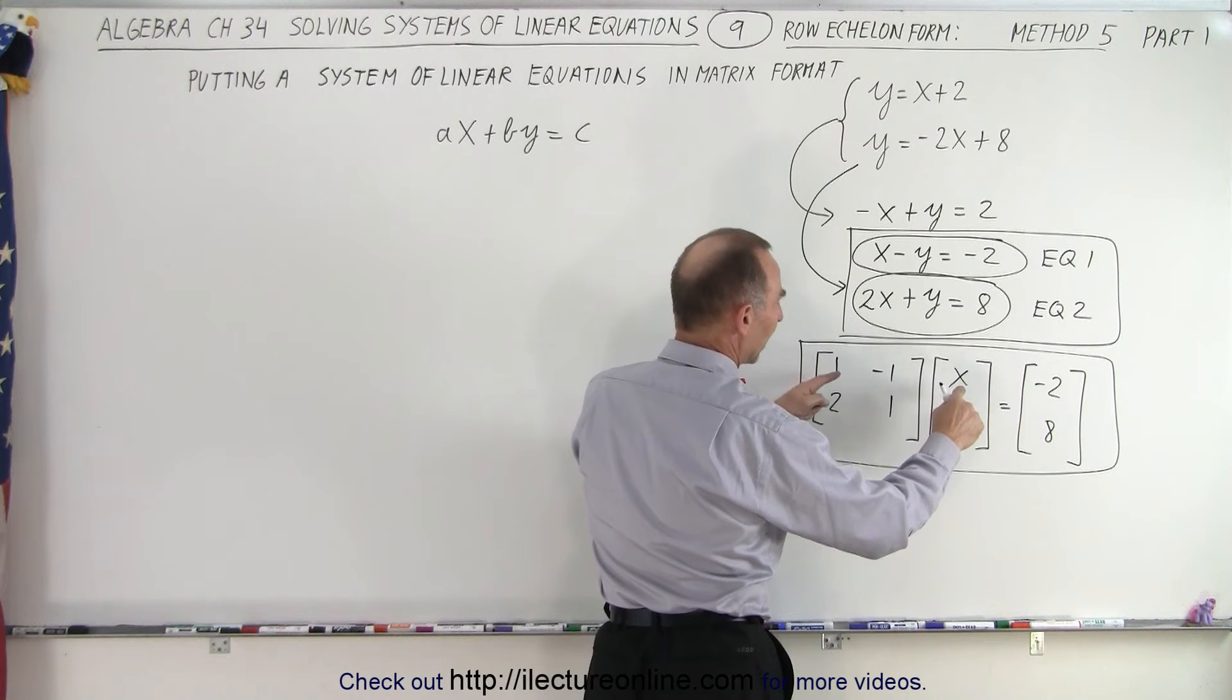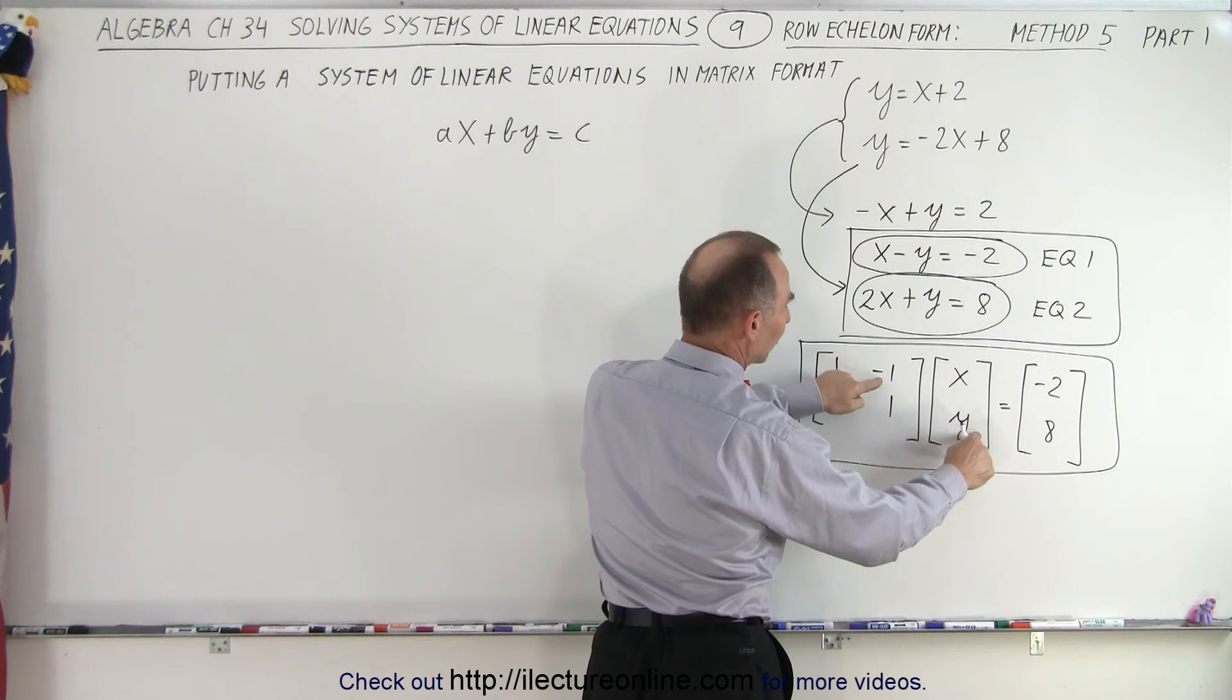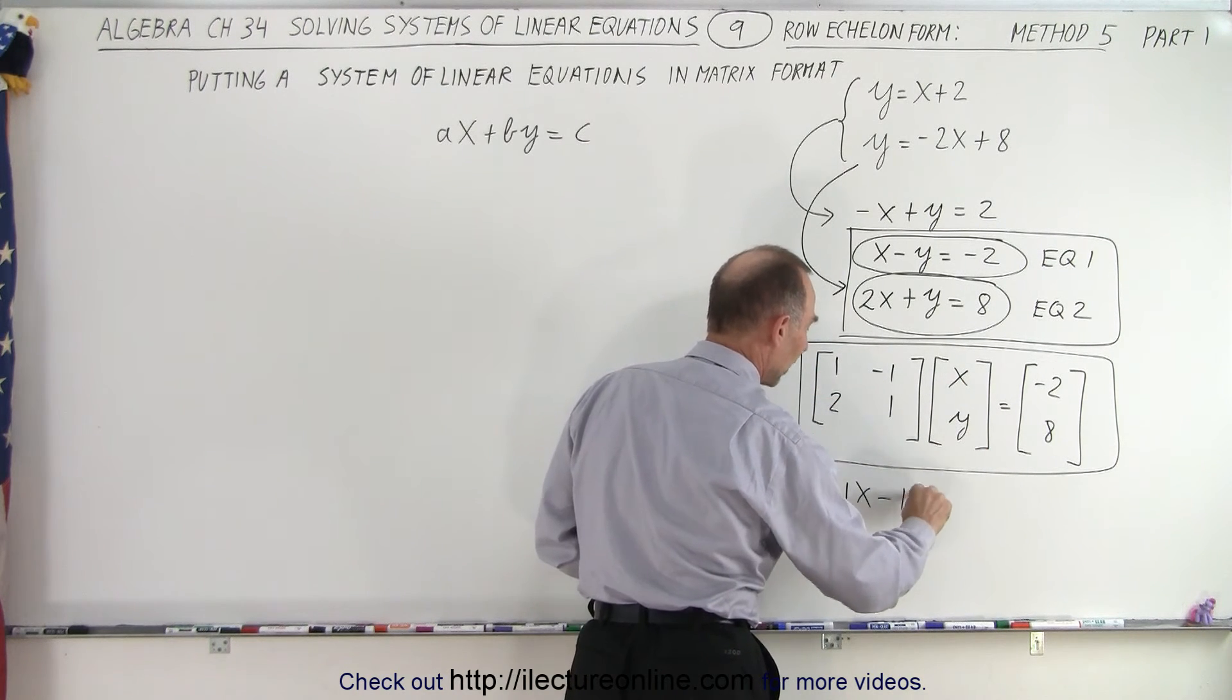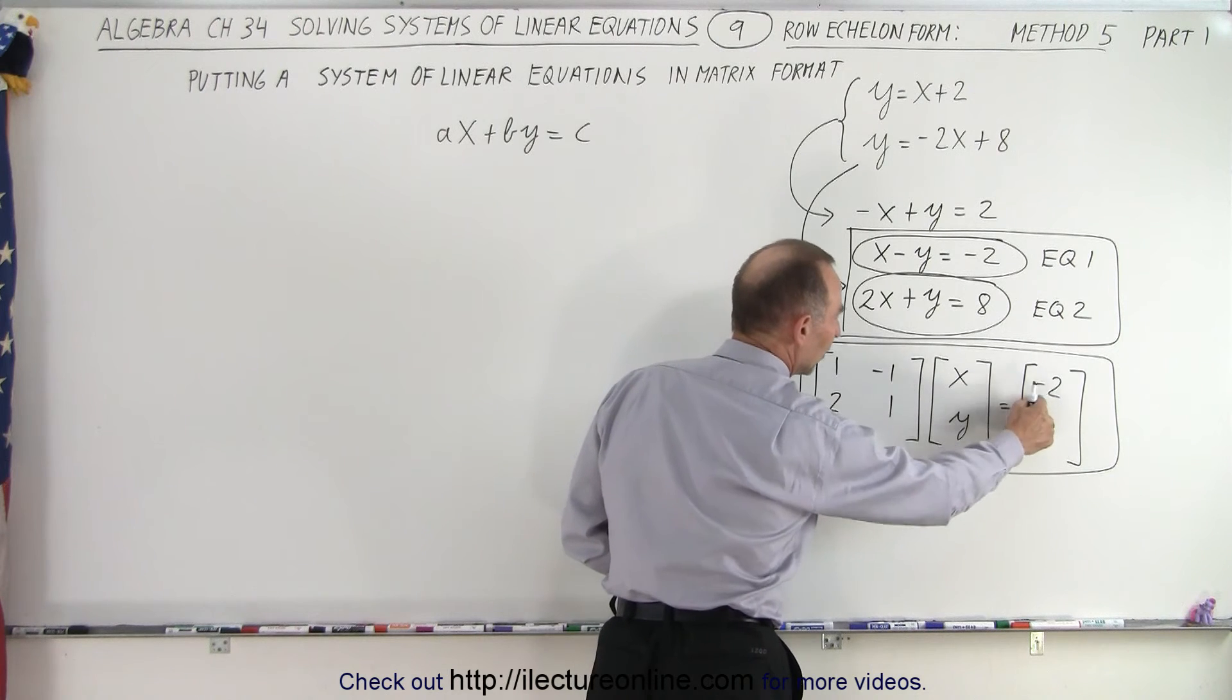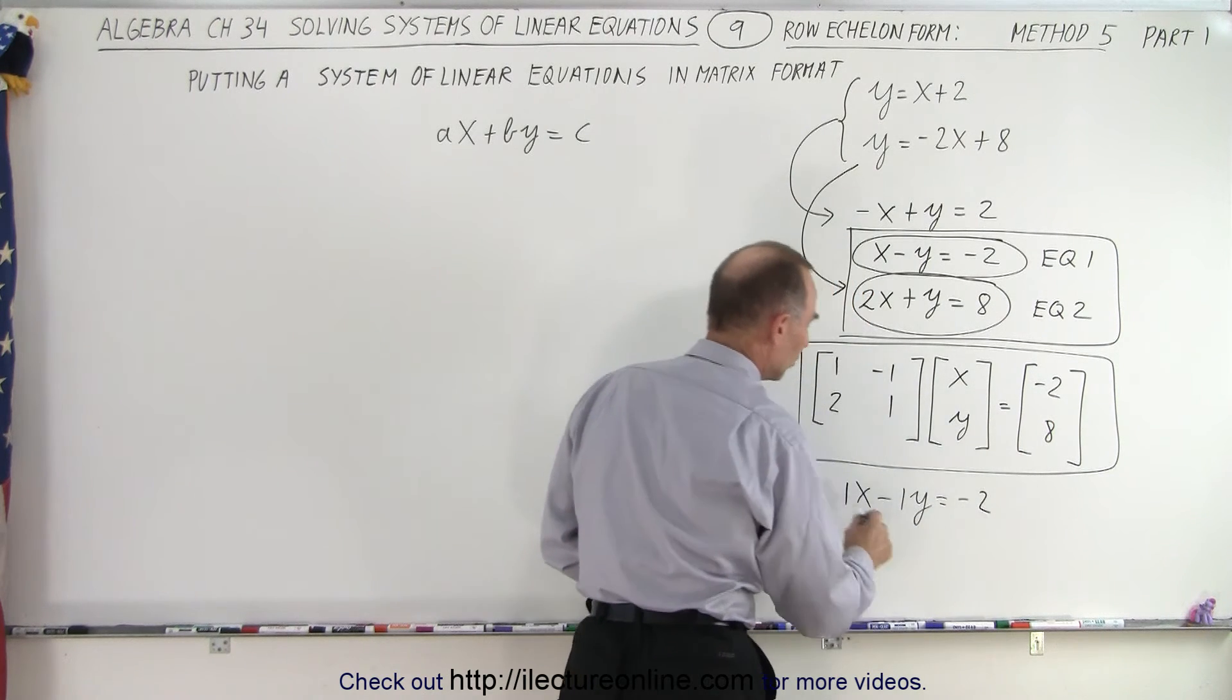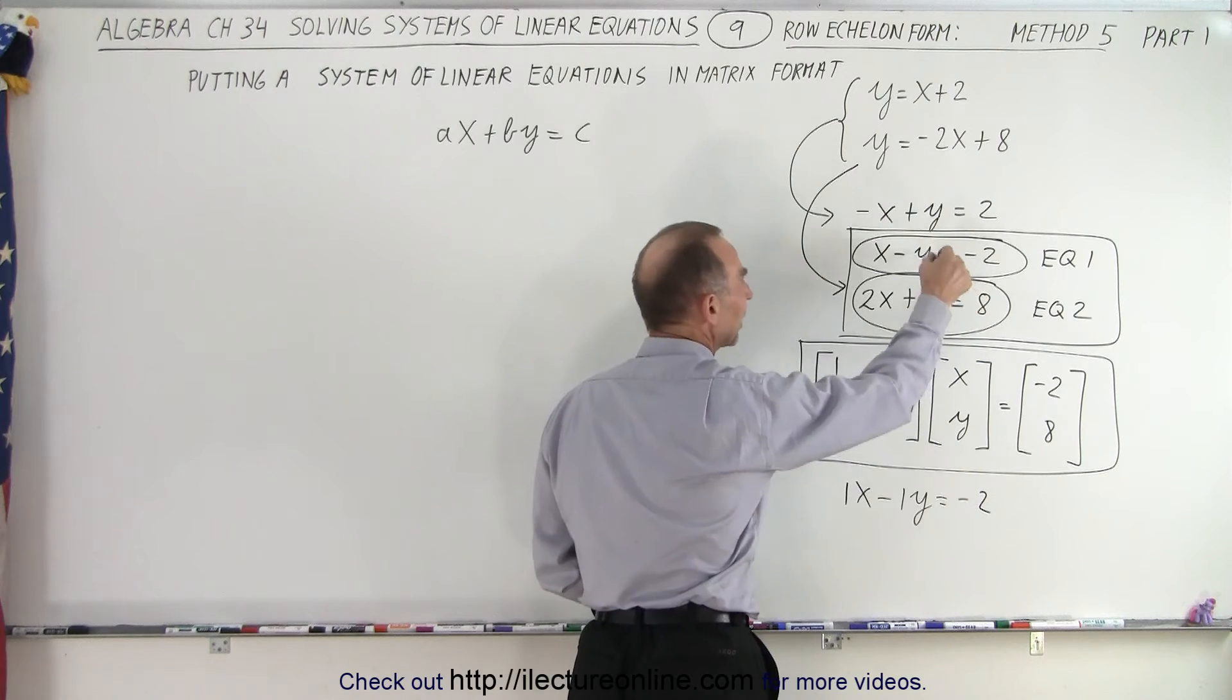Then I add the product of these two, which is -1 times y, so that's -y, equals this number, -2. Notice that's the exact same thing I have over there.